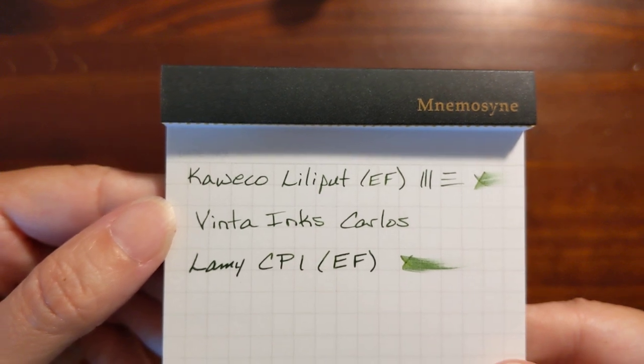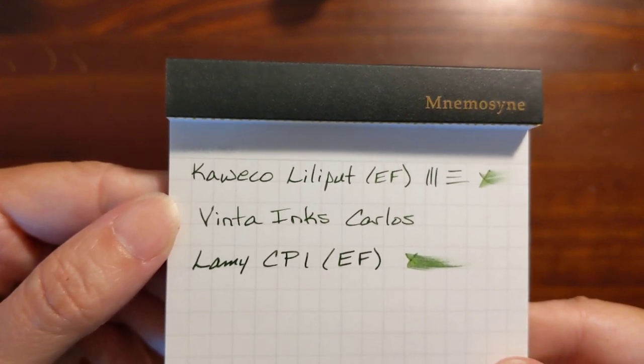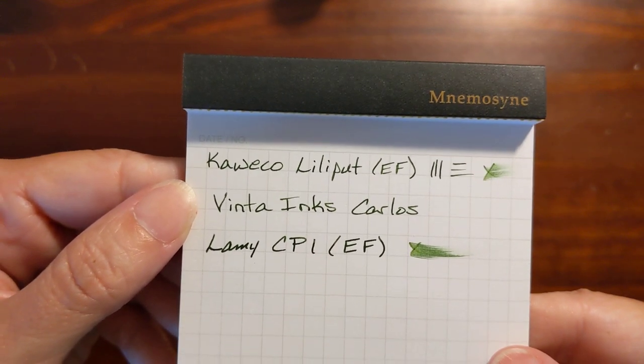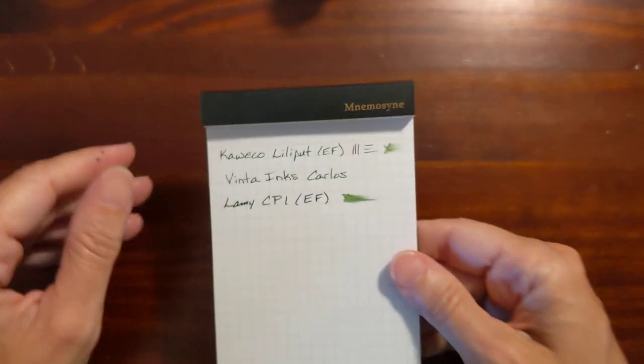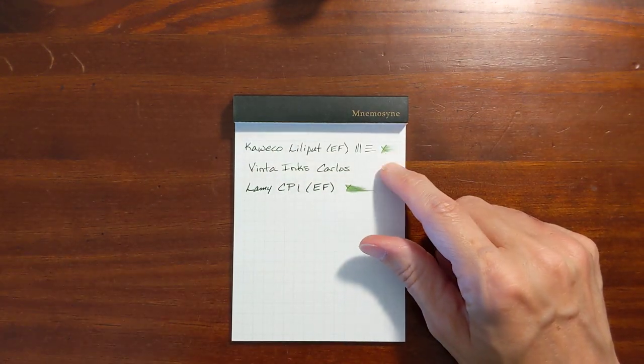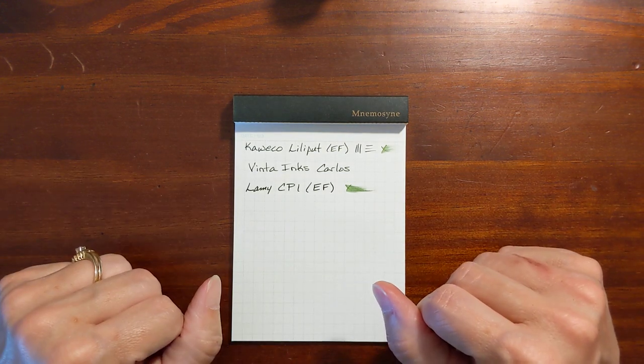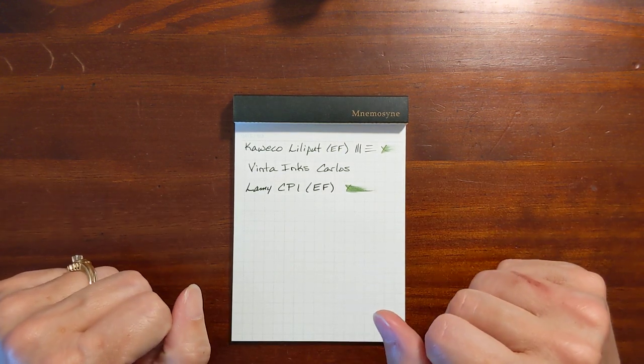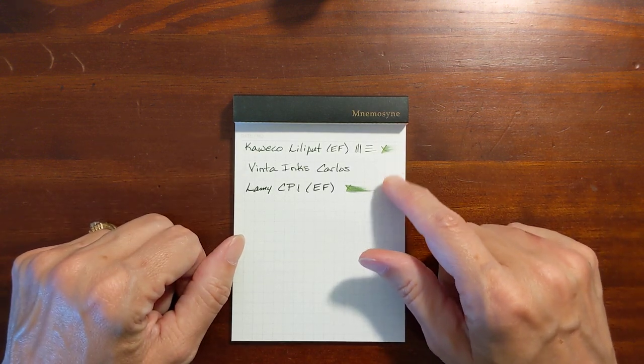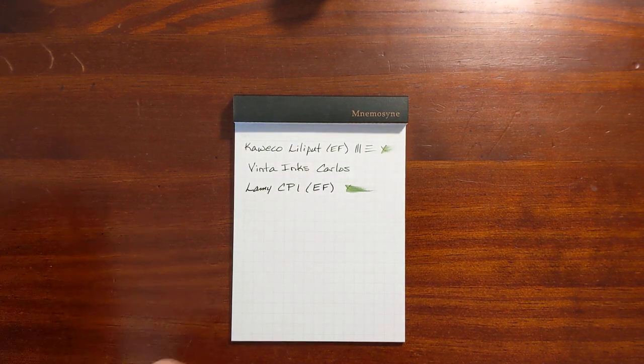I'm going to continue to experiment with this ink and different size and shape nibs but one of the things I noticed about this ink is that it's less prone to feathering than a lot of the inks I've tried especially the other army green type greens that I've tried recently.